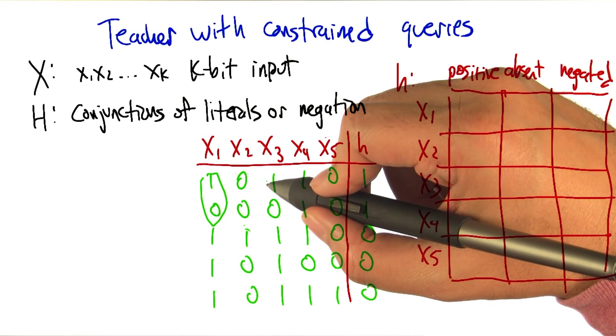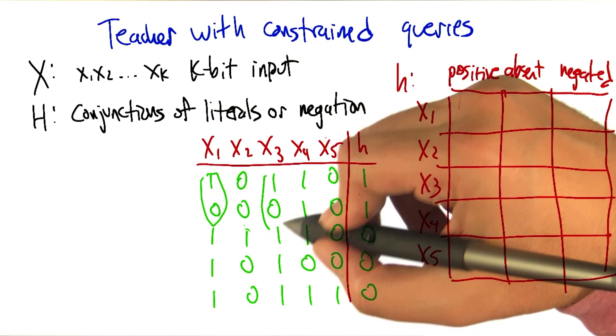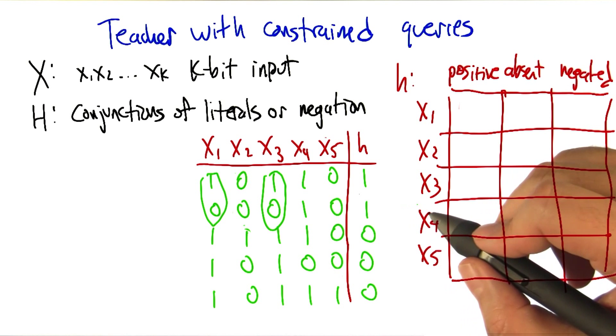So it can't be the case that it's required in order for this to be true. And the same would be true for x3. So I'm going to say that neither x1 nor x3 matter. By contrast, x2, x4, and x5 all have the same values in both of those cases. So we don't know much about them quite yet.